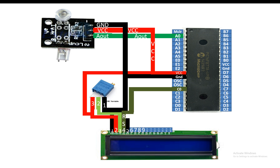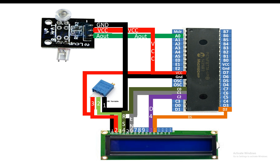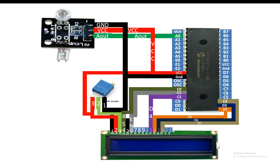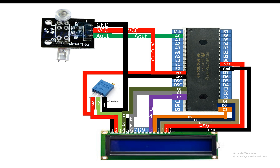Pin number 4 of the LCD is the RS pin — use any available digital I/O pin. I'm going to use C0 for RS, C1 for the Enable pin, C2 for data pin D4, D2 for data pin D5, D3 for data pin D6, and C4 for data pin D7. Pin number 15 and 16 are for the LCD backlight — 15 goes to 5V and 16 goes to ground. Pins 7, 8, 9, 10 are for 8-bit mode; we are using 4-bit mode.